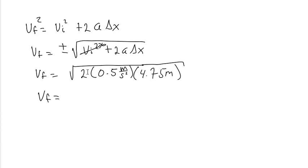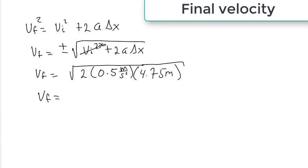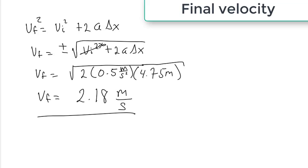The final answer is 2.18 meters per second. After 4.75 meters, the velocity of the stroller is 2.18 meters per second.